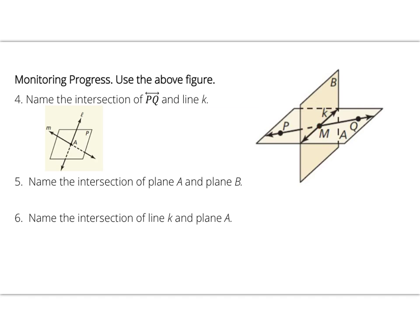The intersection of plane A and plane B is line K. And the intersection of line K and plane A is line K.